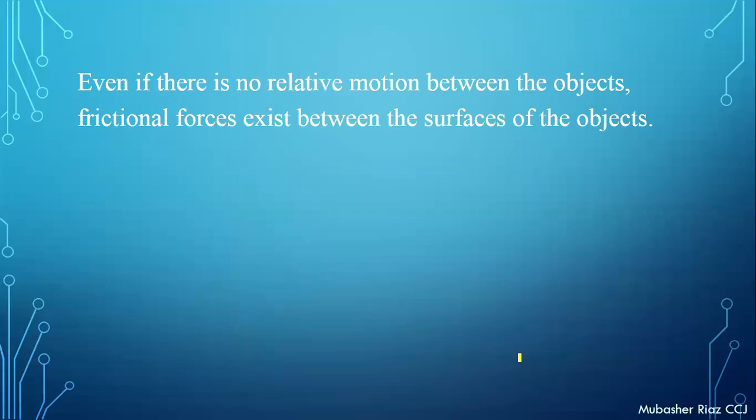Even if there is no relative motion — if an object slides over another object and there is no relative motion — relative motion means motion of an object with respect to another object — if an object does not move relative to another object, then frictional forces will still exist. So you can note that there is always friction present.